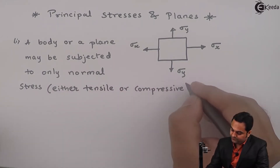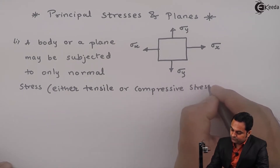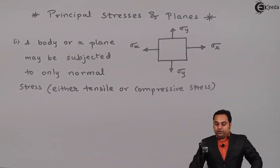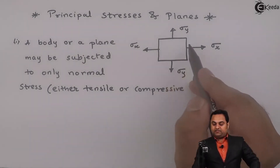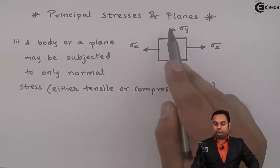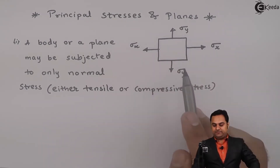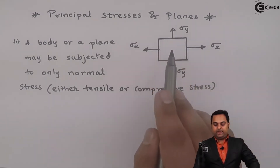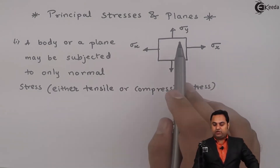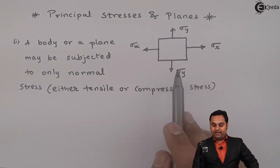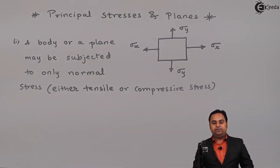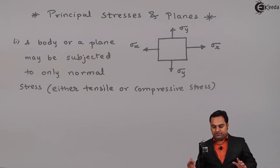Normal stress means either tensile or compressive stress. So in example one, a plane is subjected to stresses along two perpendicular directions, that is along X and Y. Along X the stress is Sigma X, along Y it is Sigma Y, and they are called normal stresses. So a plane may be subjected to only normal stress.